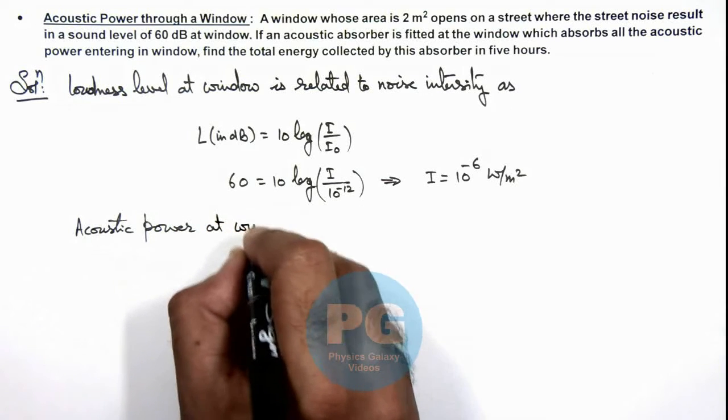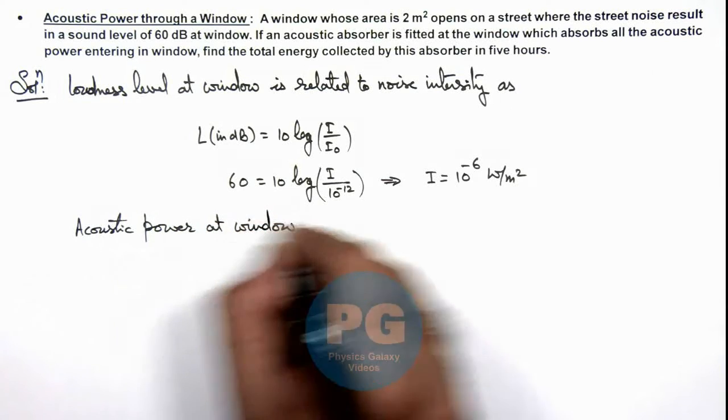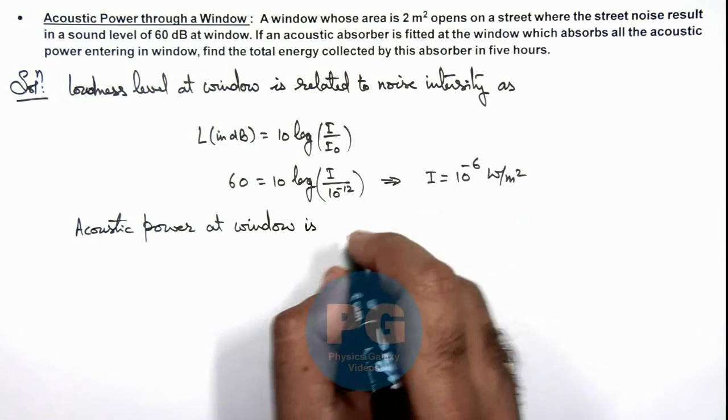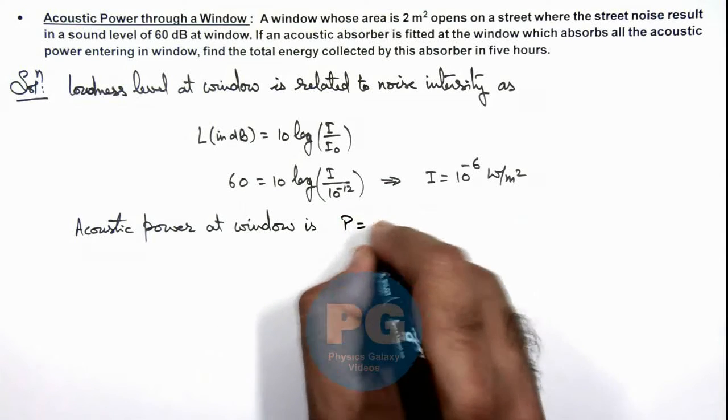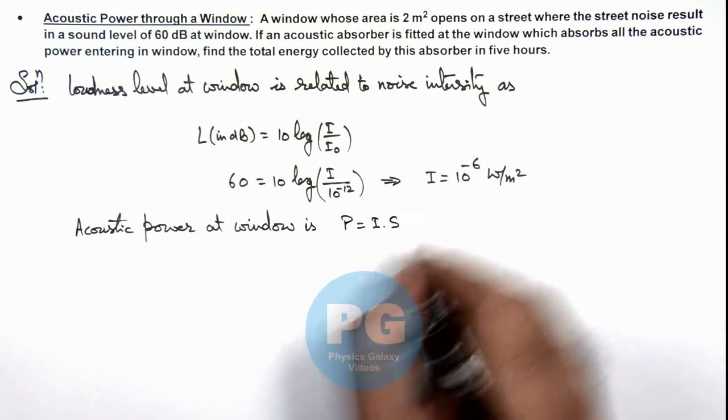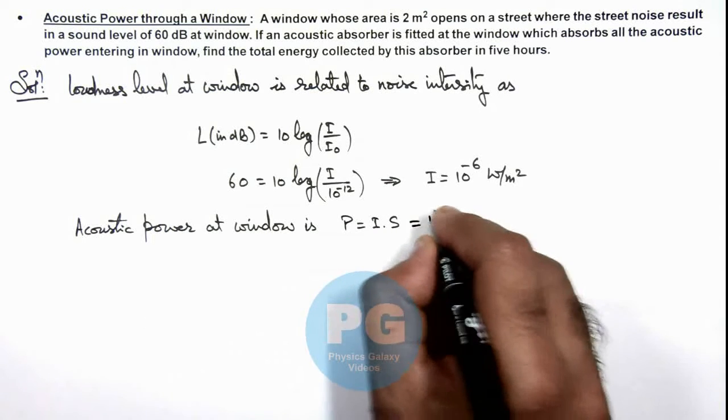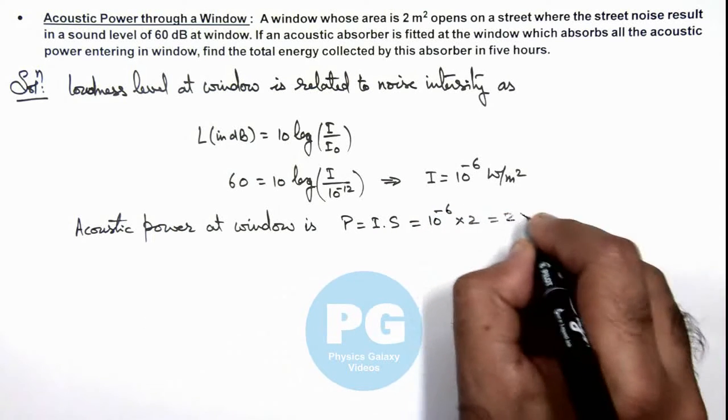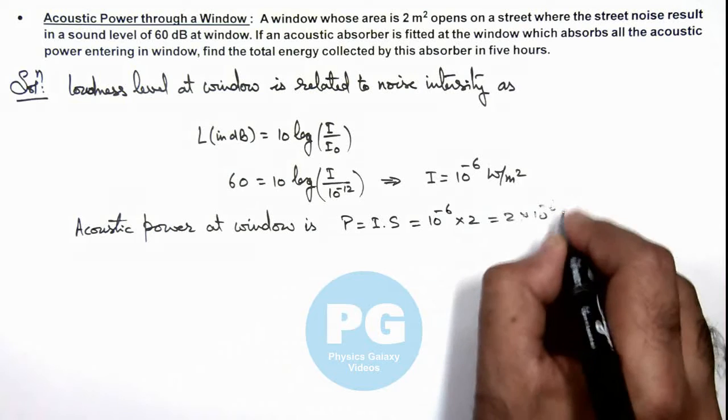At window, which is due to the street noise, this power we can write as I multiplied by the cross sectional area of window. So this is 10 to power minus 6 multiplied by 2, which is 2 into 10 to power minus 6 watt.